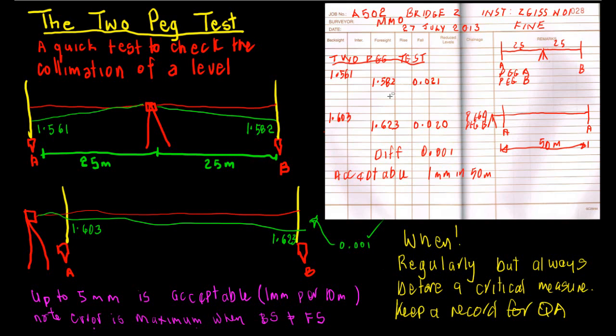So there we have the two peg test done and completed and recorded. Now, when should we do this test? Well, regularly - should do it regularly. But if, say, for instance when you get a new instrument from someone else, or particularly before you're going to do a particularly critical measurement, good idea to do the two peg test.